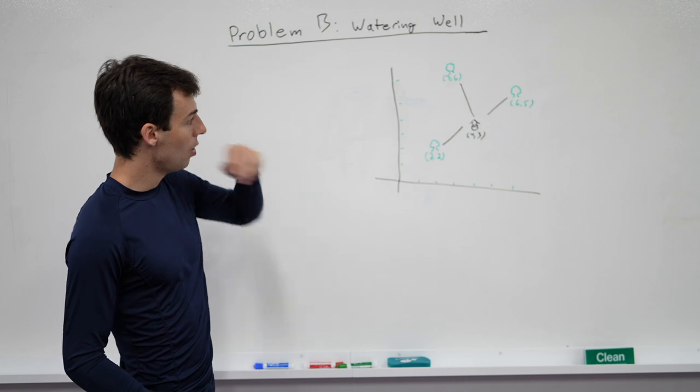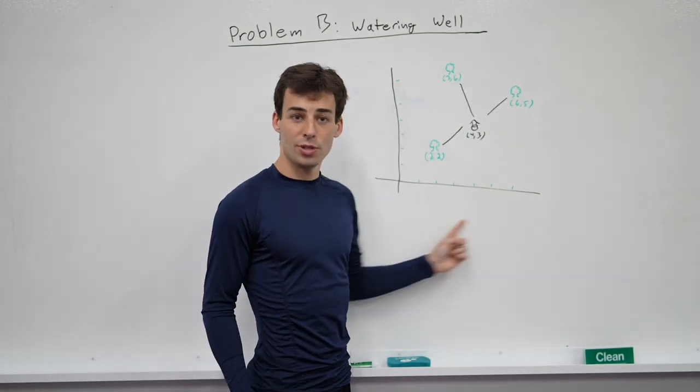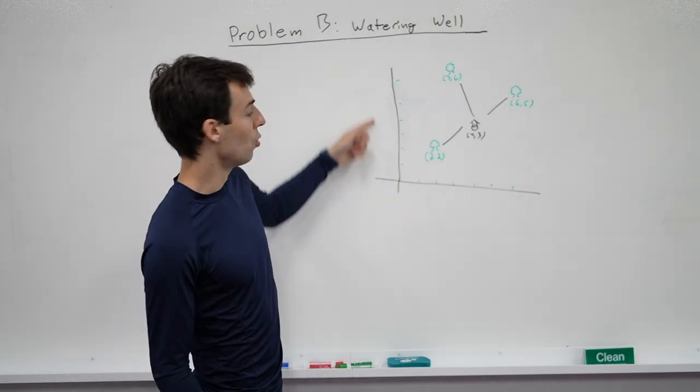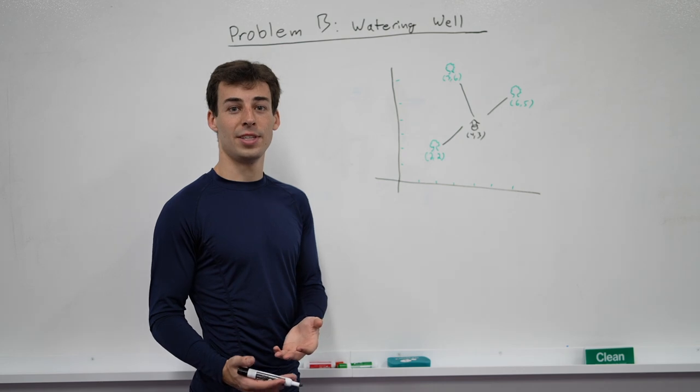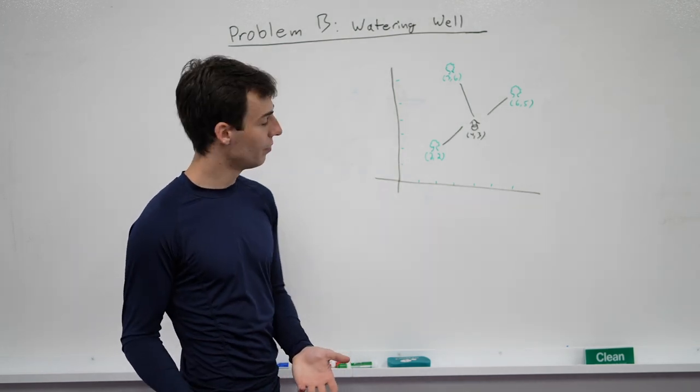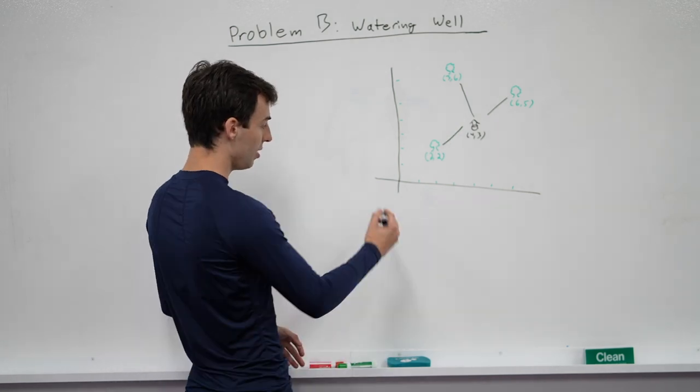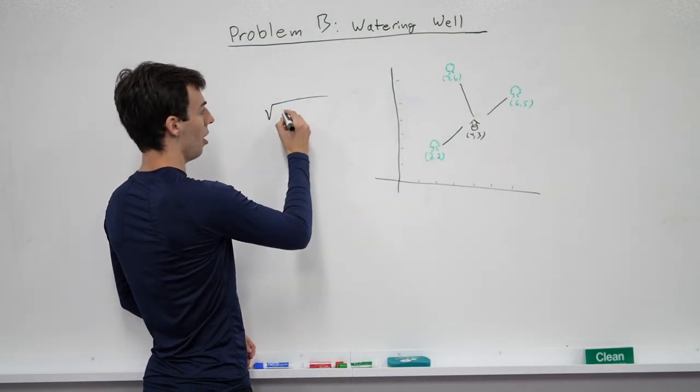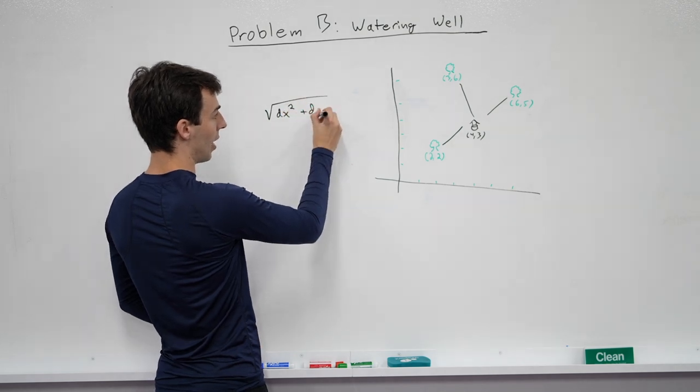So how do we do this? Well, one thing to observe is that we don't have that many unique x coordinates. We also don't have that many unique y coordinates, so we're going to abuse that bound and have that be some part of the runtime of our solution. The other thing we want to look at is the formula for distance.